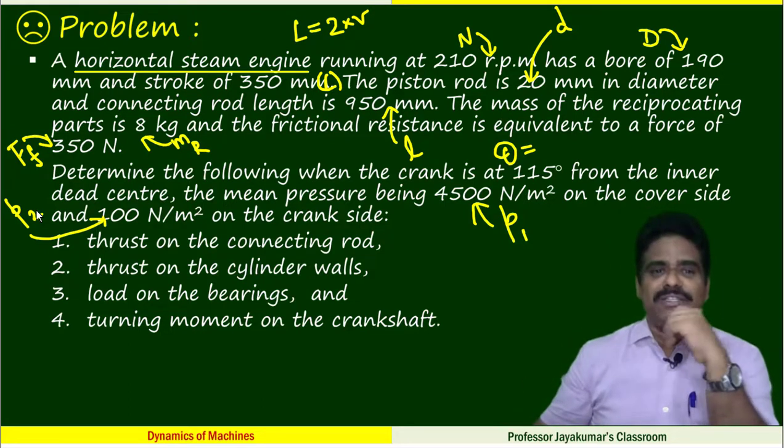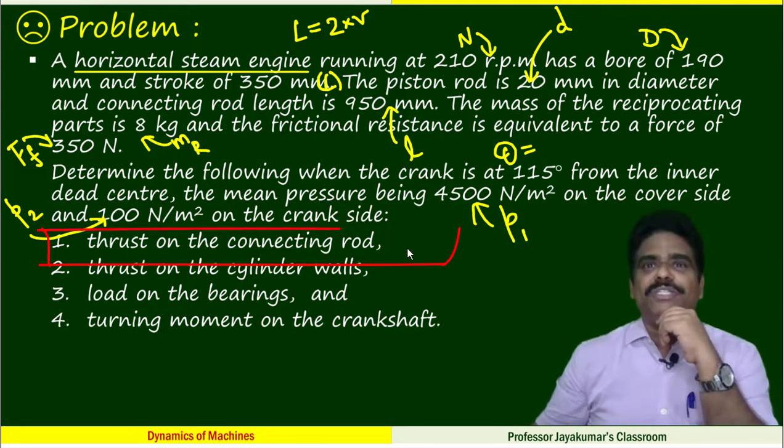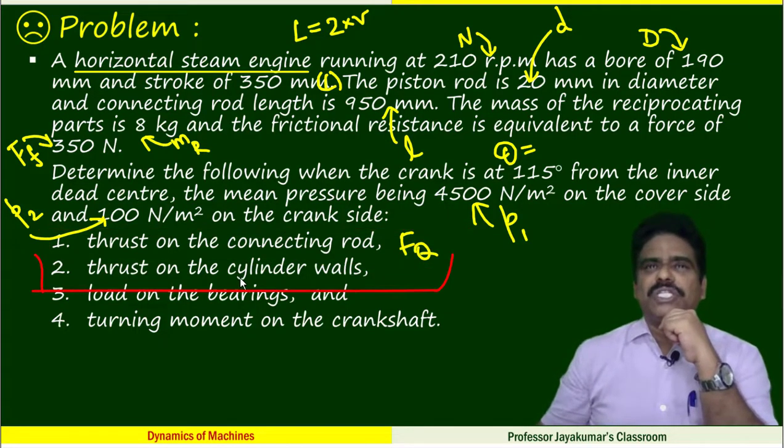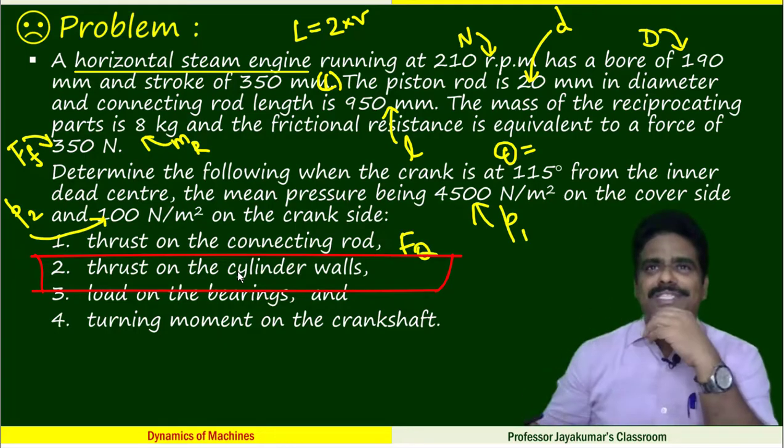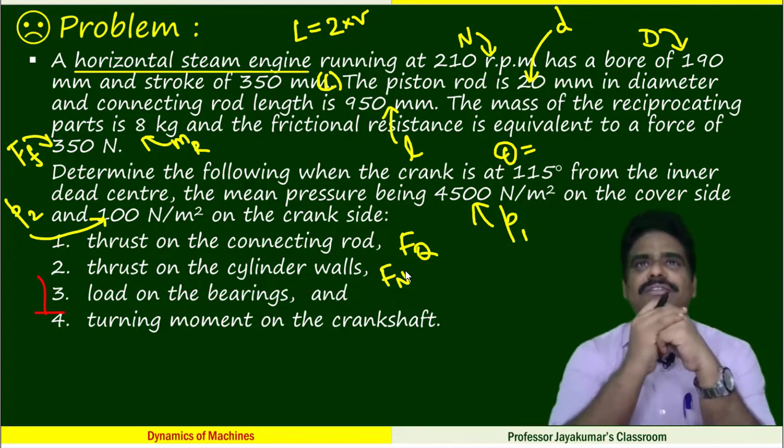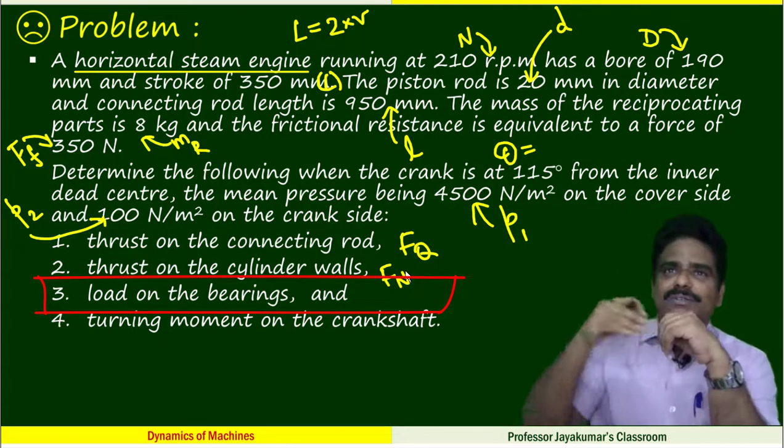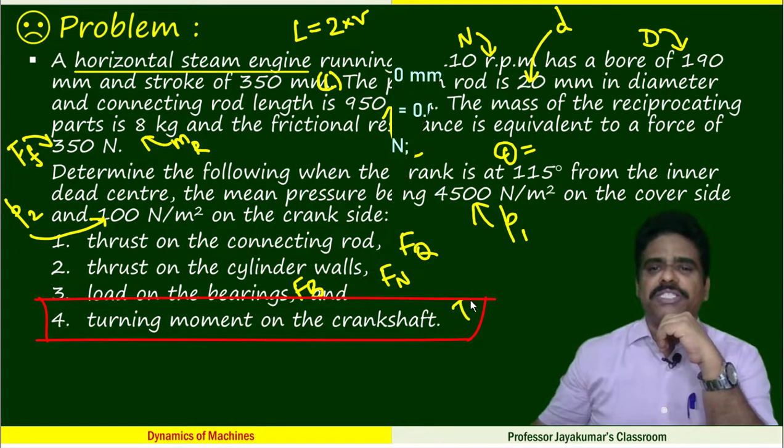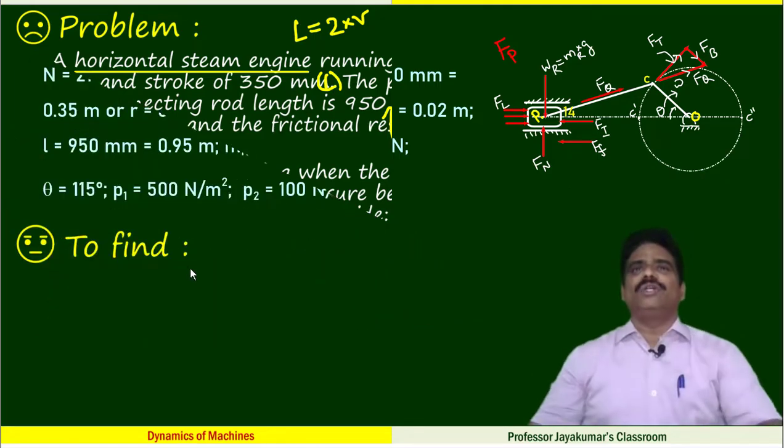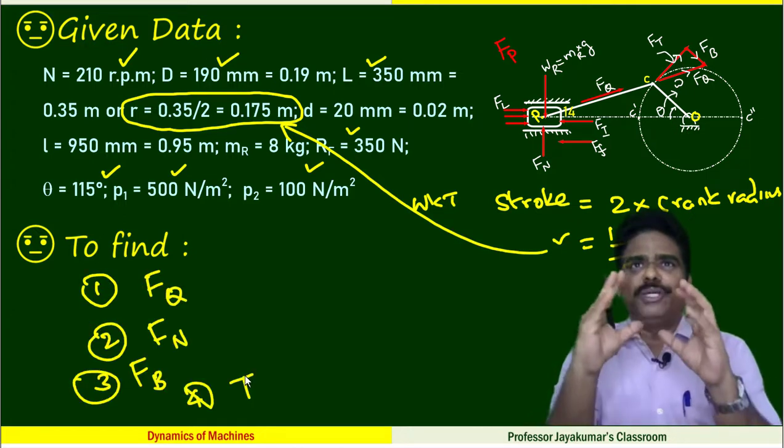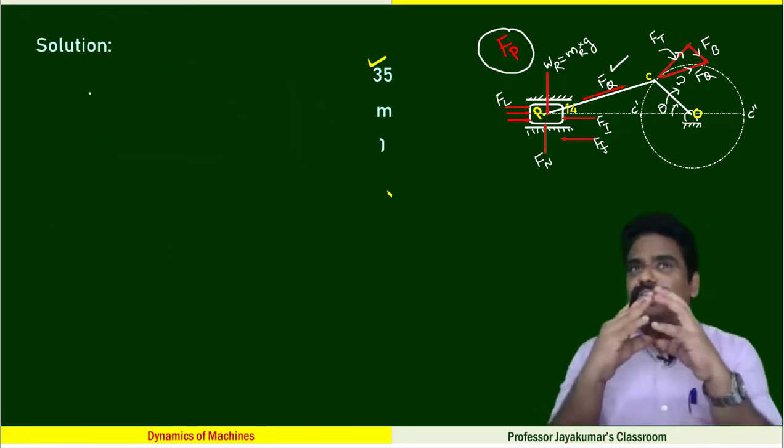What are the things we need to determine? We need to determine thrust on the connecting rod, that is FQ. Thrust on the side walls, which is nothing but normal reaction exerted by the cylinder on the walls, FN. Load on the bearings, FB. Finally, they need turning moment T. These are the various data given. Before going to the solution, we need to find some common findings.